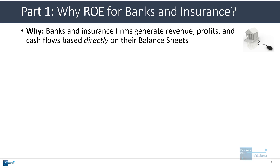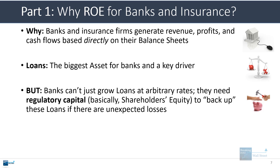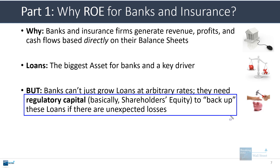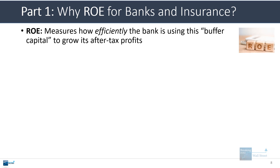ROE matters for banks and insurance firms because they generate revenue, profits, and cash flows based directly on their balance sheets. Loans are the biggest asset for banks and a key driver in all models. But a bank can't just grow its loans at 10%, 15%, or 20%, because they need regulatory capital to back up these loans in case of unexpected losses. Regulatory capital is basically shareholders' equity with some modifications. A bank can increase its shareholders' equity by generating net income and retaining it, or by raising capital from shareholders. Since banks are required to keep a certain amount of shareholders' equity, return on equity measures how efficiently the bank is using its buffer capital to grow its after-tax profits.